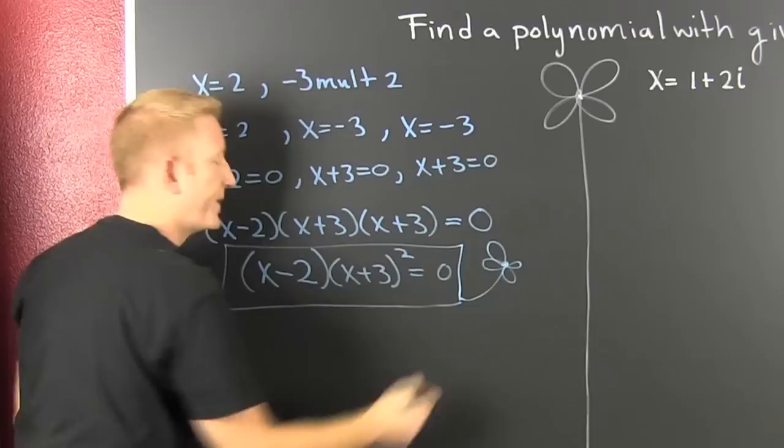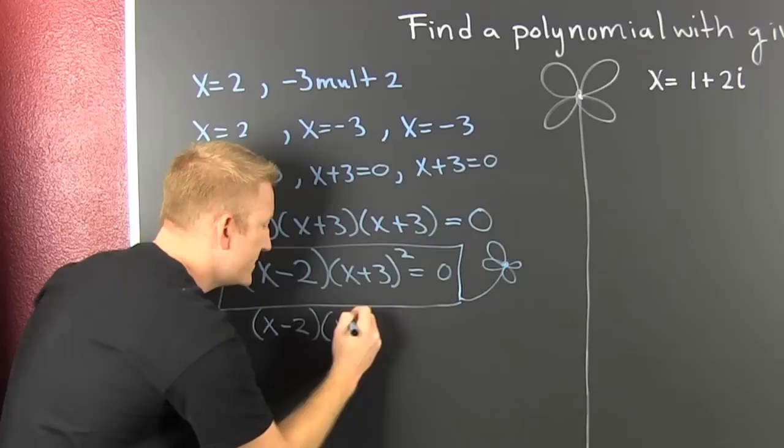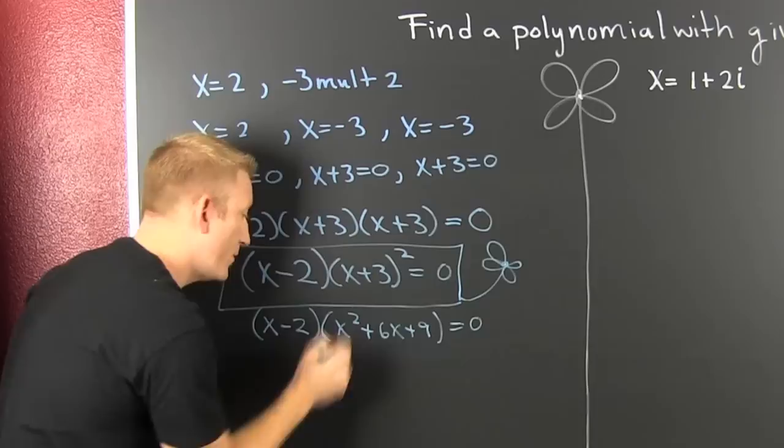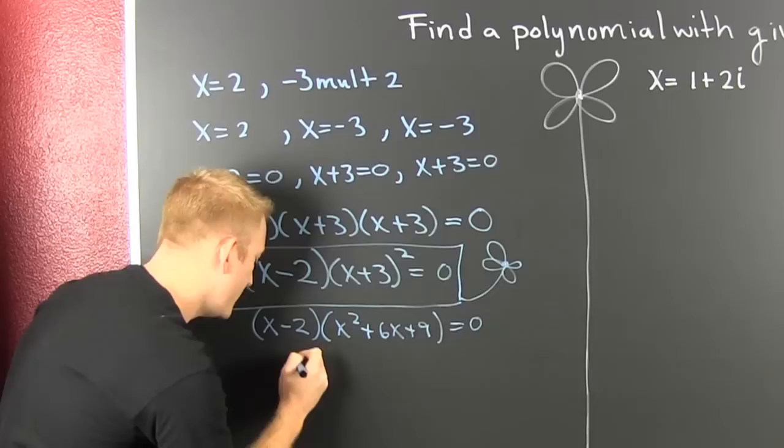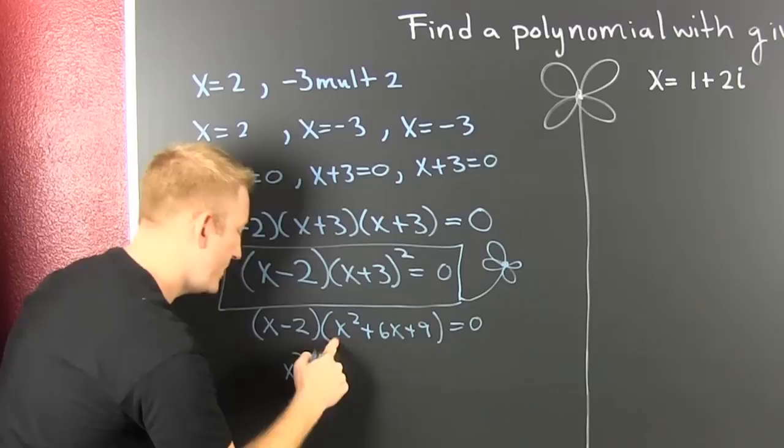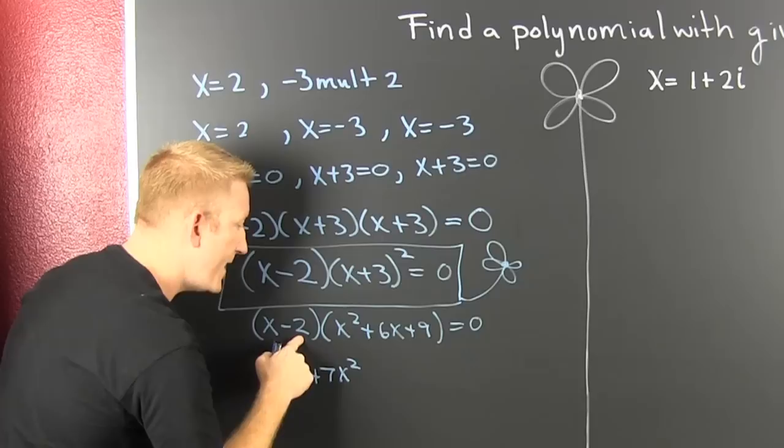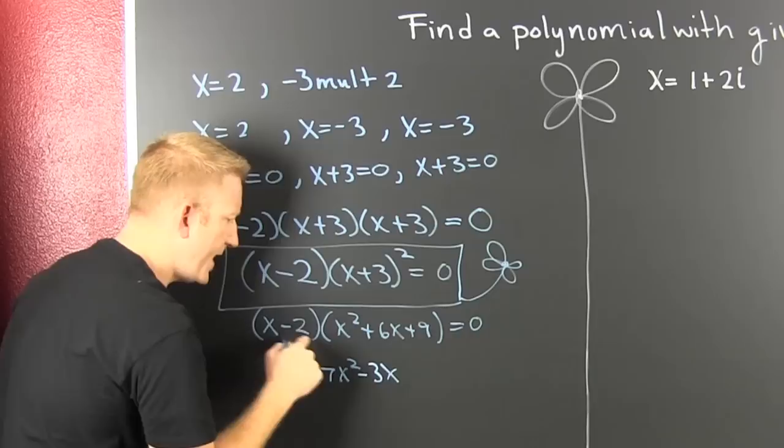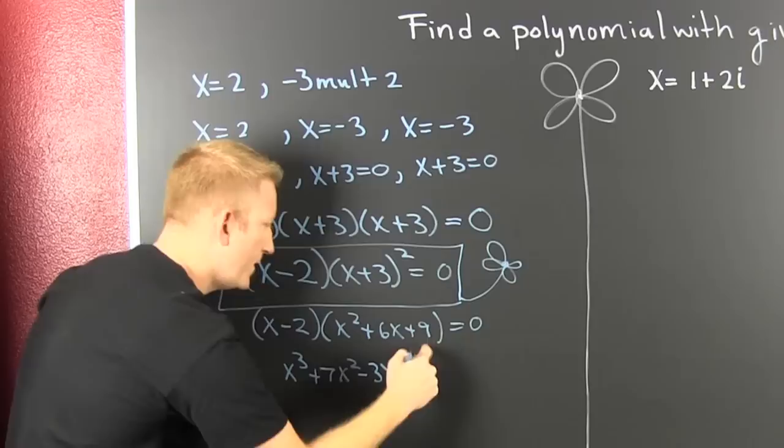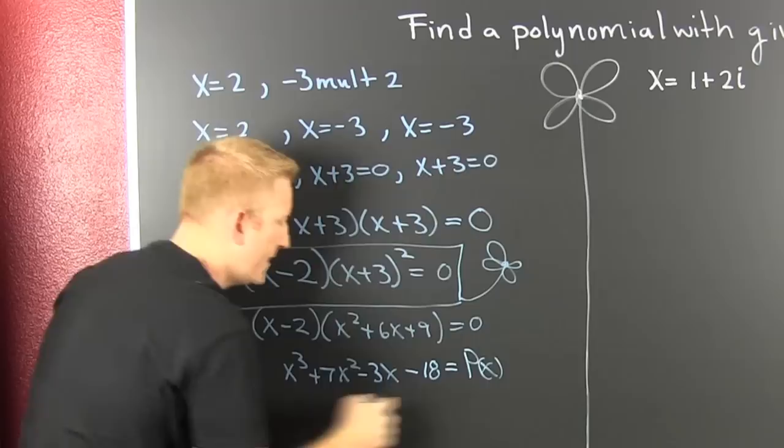But perhaps you want to multiply that out. You're all like x minus two times x squared. This one times that one. Double it. Plus six x plus nine. Fine. That's still equal to zero. So, then you go a little bit further, and then you multiply all these guys out, and you find that this is x to the third. Then there's a six x squared plus an x squared is seven x squared. And then x times nine. That's nine x. And then nine x minus 12 x is minus three x. What's next? That last term? Minus 18.